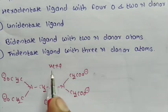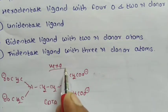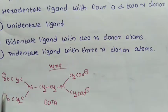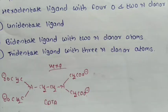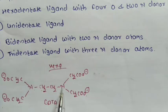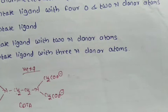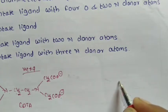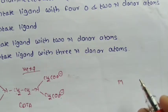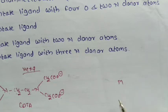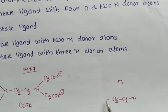This EDTA ligand is a hexadentate ion with 4 oxygen and 2 nitrogen donor atoms. EDTA has 4 donor oxygen atoms and 2 donor nitrogen atoms. When this EDTA is joined with a central metal, here we write the CH₂CH₂ chain with the attached acetate groups.